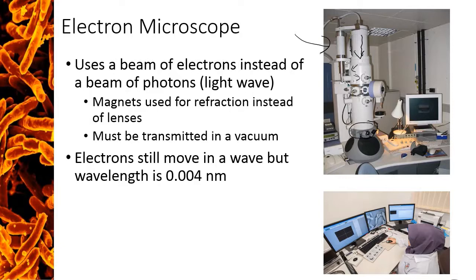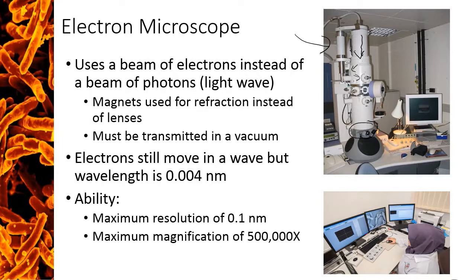However, the wavelength of a beam of electrons is much smaller, at about four thousandths of a nanometer. If you remember the equation for resolution, a wavelength this tiny means that the electron microscopes have a much higher resolving power and allow you to see very detailed images. In fact, the maximum resolution of an electron microscope is about 0.1 nanometers, while the maximum magnification is about 500,000 times.